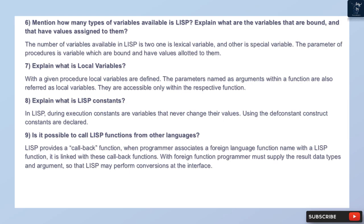The parameters of procedures are variables which are bound and have values allotted to them. Question 7: Explain what local variables are. Within a given procedure, local variables are defined. The parameters named as arguments within a function are also referred to as local variables; they are accessible only within the respective function.